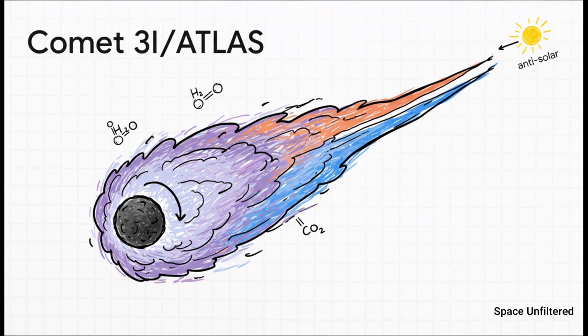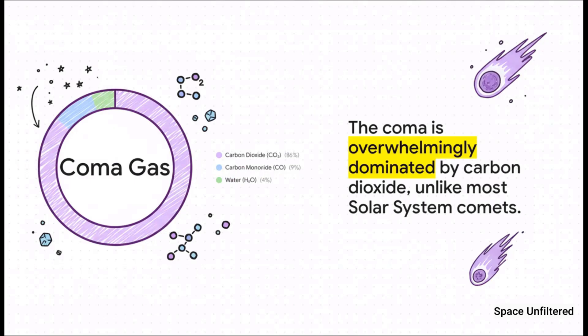It has a solid nucleus that, as it got closer to the sun, heated up and began releasing gas and dust to form that fuzzy coma. A faint dust tail also started to develop, pushed away from the sun by solar radiation.